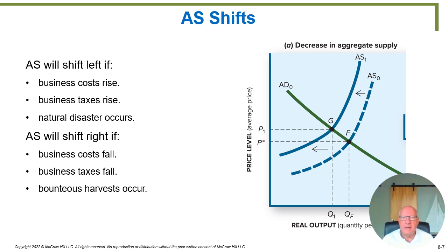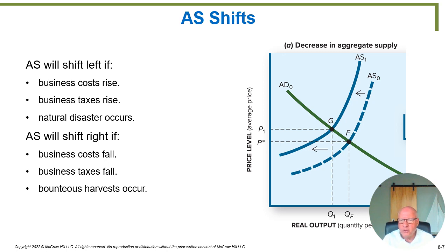Of course, the AS curve doesn't always have to shift left. If we were under-producing compared to full employment, what could push the curve out to the right? If business costs come down, if taxes come down, or if instead of a natural disaster we had something beneficial — like perfect weather producing a bounteous harvest with more corn, soybeans, and wheat than normal — the US would be wealthier, able to produce at a higher level, workers would be employed, and we'd reach the QF full employment level of output. The aggregate supply curve can move either leftward or rightward depending on conditions.